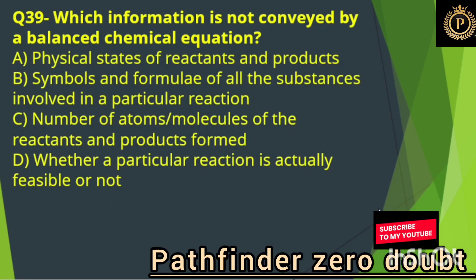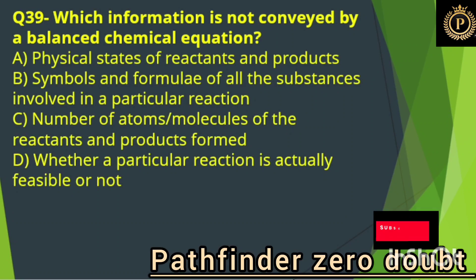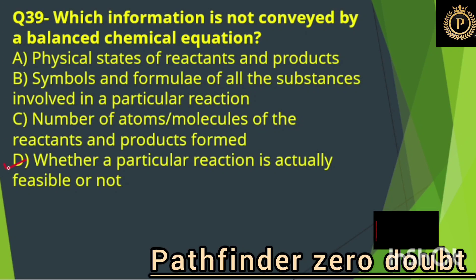Which information is not conveyed by a balanced chemical equation? Option D, whether a particular reaction is actually feasible or not.